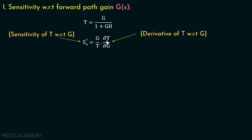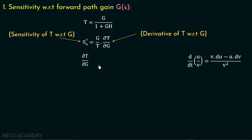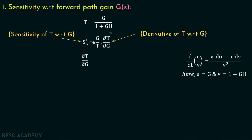To find del T over del G we will differentiate this transfer function with respect to G. To differentiate fractions we use the U by V rule of differentiation, which is V multiplied with derivative of U minus U multiplied with derivative of V over V squared. In this case U is the numerator function equal to G and V is the denominator function equal to 1 plus GH.